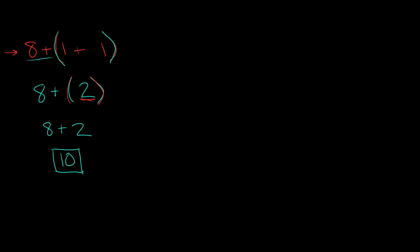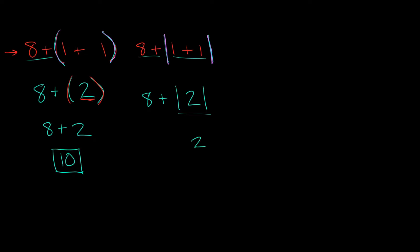Now let's try this problem again, but instead of parentheses, what if I put absolute value bars around the 1 plus 1 part? We treat absolute value bars similarly to parentheses, so that's where we start. What is the absolute value of 1 plus 1? First simplify inside: 1 plus 1 is 2. So we have the absolute value of 2, which is just 2. So we're left with 8 plus 2, which again equals 10.